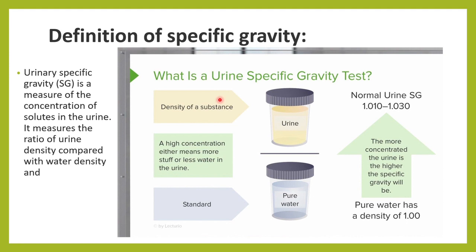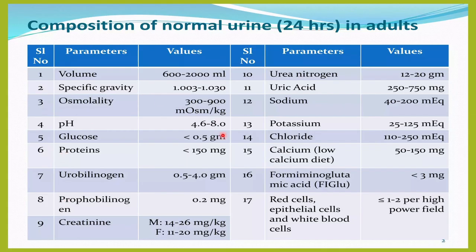Specific gravity kya hota hai? Specific gravity is the measure of concentration of solutes in the urine. Urine mein lot of solutes which are present normally also, and that concentration of the solutes ko jo measure karta hai, usko hum bolte hai specific gravity.